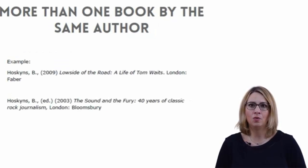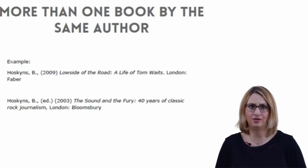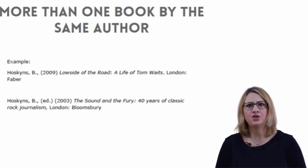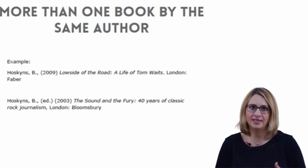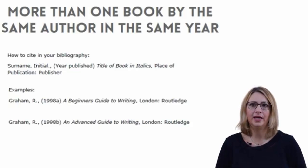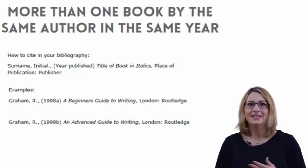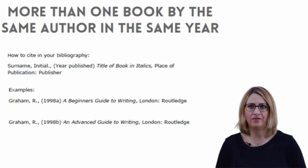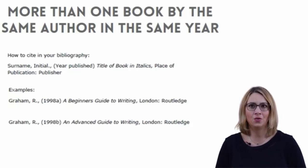If you would like to cite two or more books by the same author, as long as these are published in a different year, this is not an issue in Harvard referencing. In your bibliography, list each book by the same author in order of the date published with the earliest first. If authors have published more than one book in the same year and you are citing from them all, you can distinguish between each book with an A, B, C, etc. in your quoting or paraphrasing, and then list the full details in your bibliography with an A, B, C, etc. after the year published so that the books can be matched accordingly.